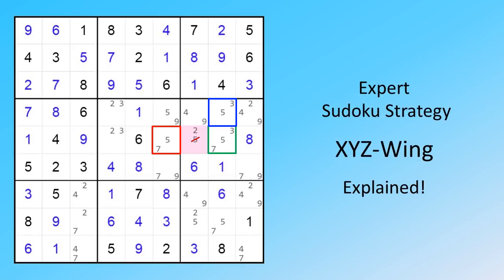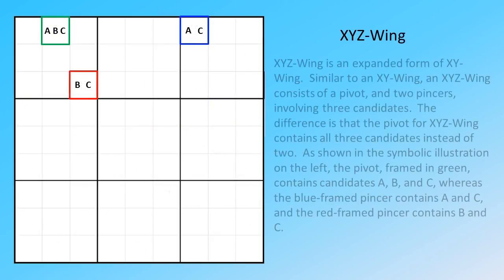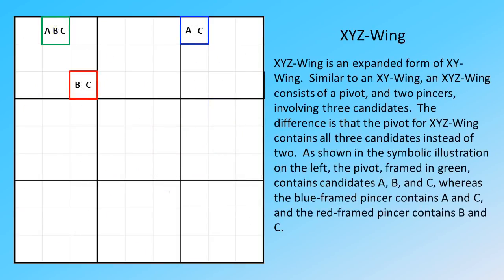Expert Sudoku Strategy XYZ Wing Explained. XYZ Wing is an expanded form of XY Wing. Similar to an XY Wing, an XYZ Wing consists of a pivot and two pincers involving three candidates.